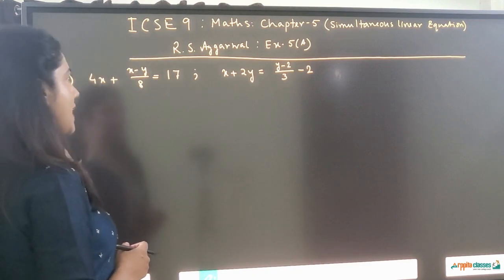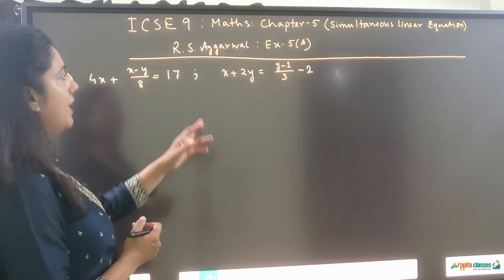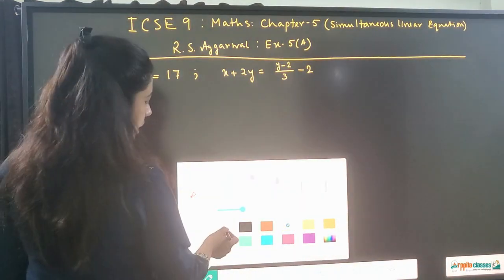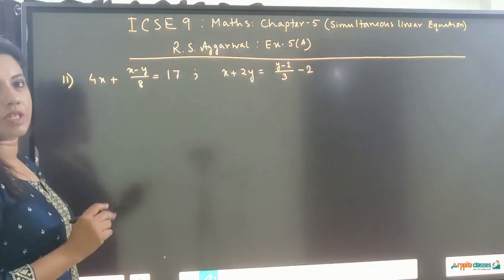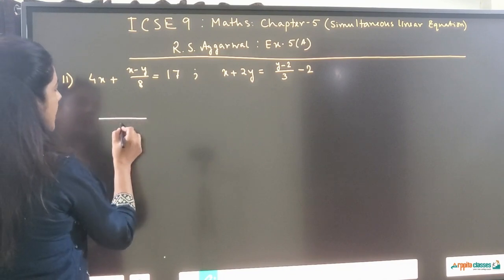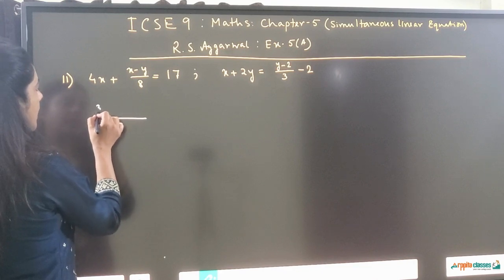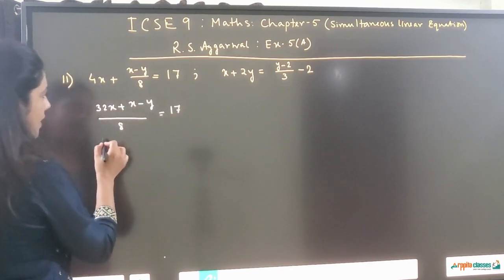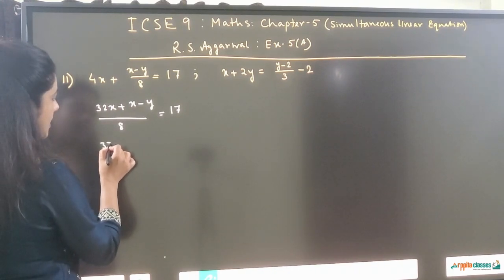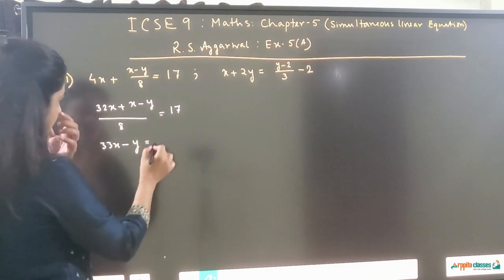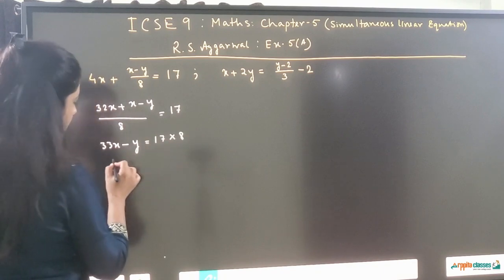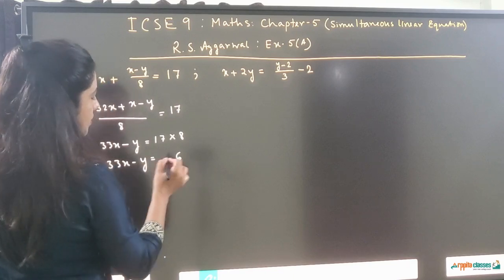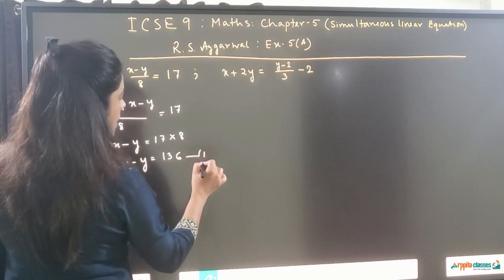Question number 11: 4x plus (x minus y) upon 8 is equal to 17, and x plus 2y is equal to (y minus 2) by 3 minus 2. First we need to get them in standard form. Taking 8 as the LCM, we get 32x plus x minus y is equal to 17 into 8, so that is 33x minus y is equal to 136. This is equation number 1.